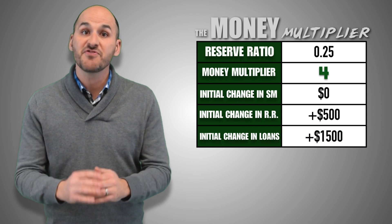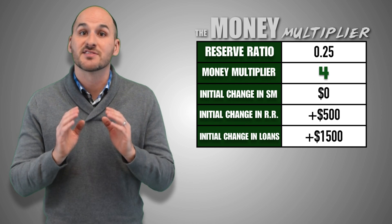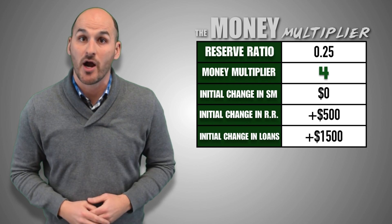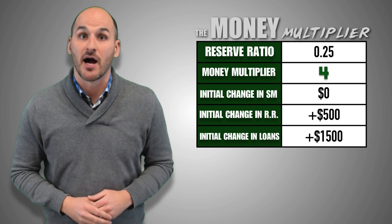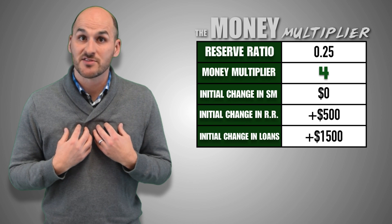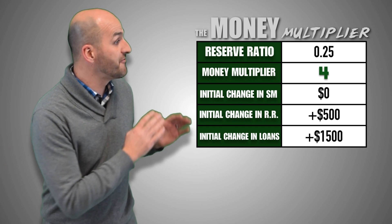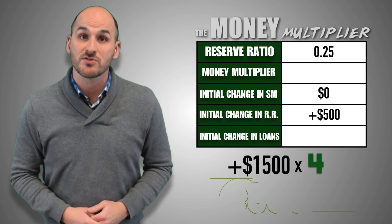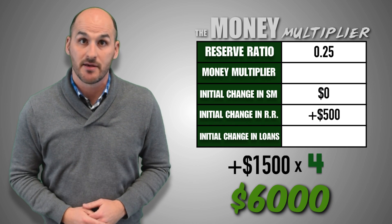When the $1,500 of new loans are eventually redeposited back into banks, it sets off a chain reaction of fractional reserve banking that will increase required reserves, excess reserves, and the money supply through the multiplier effect. Ultimately, my $2,000 demand deposit initially increased the money supply by $1,500, and could potentially create as much as $6,000 in new money throughout the banking system and the aggregate economy.